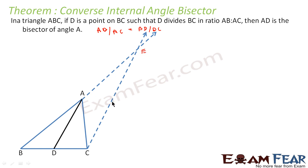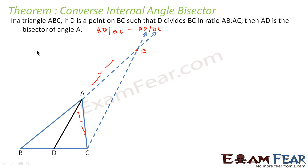We have drawn this point and measured AC. Let us suppose AC is X units. We draw the same X units on the extended line and get point E, then we join CE. So what we have is: AB by AC is equal to BD by DC, and also AC is equal to AE.